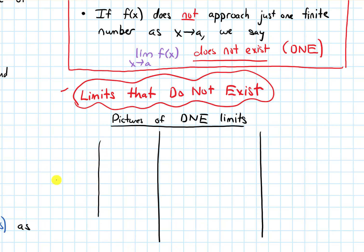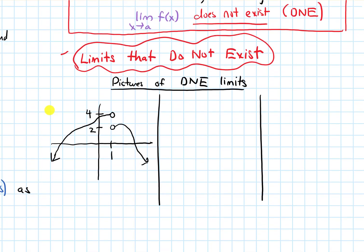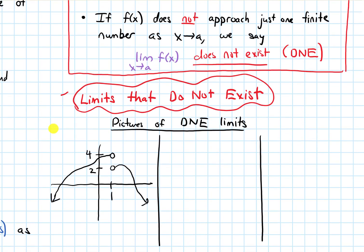I'm going to draw some axes for this first picture and put 1 on the x-axis. Let's have my graph go upwards like this, with an open circle here, and let's say that the y value at that hole is 4. Then it picks up from this hole down here at a y value of 2, and drops down and continues down like that. Let's talk about the limit as x approaches 1 of f of x.